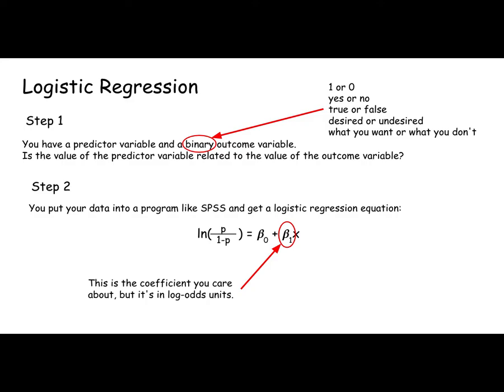To do logistic regression, you're starting with this predictor variable and binary outcome variable. You get your software like SPSS and you get this kind of equation.